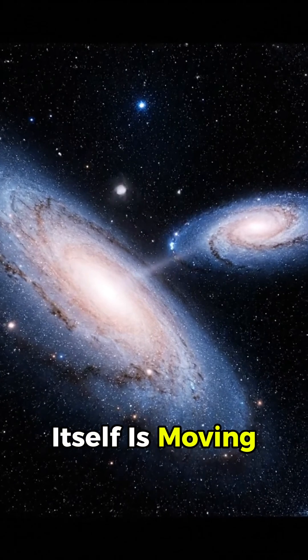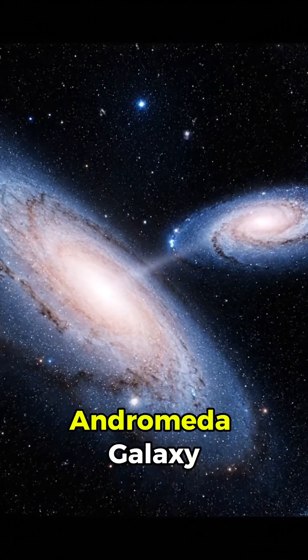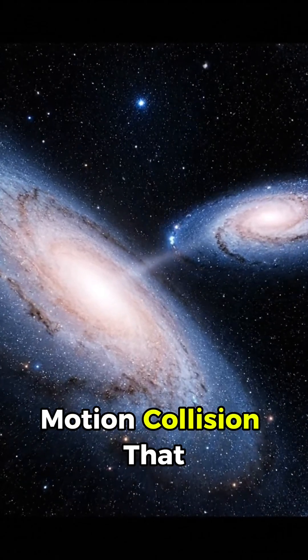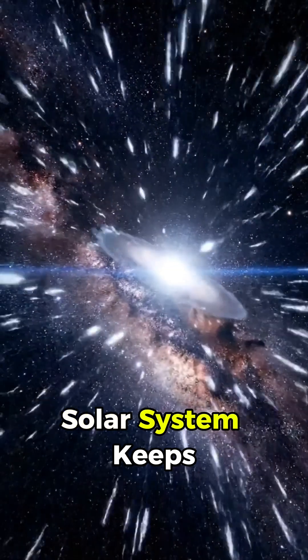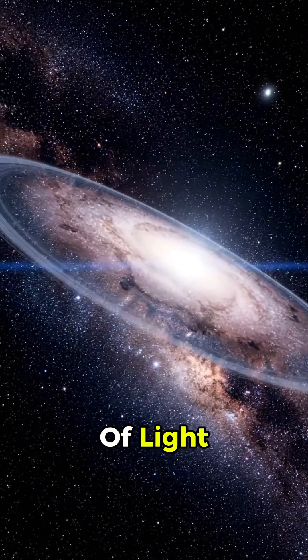The Milky Way itself is moving, racing toward the Andromeda galaxy in a slow-motion collision that will reshape the sky, while our tiny solar system keeps cruising, unnoticed, through a spiral of light.